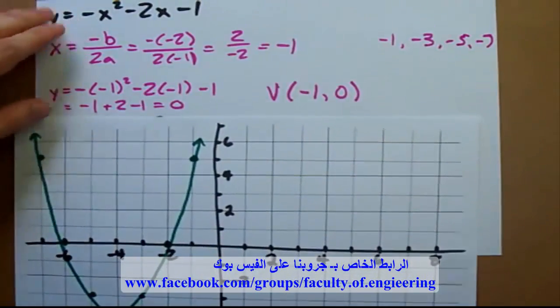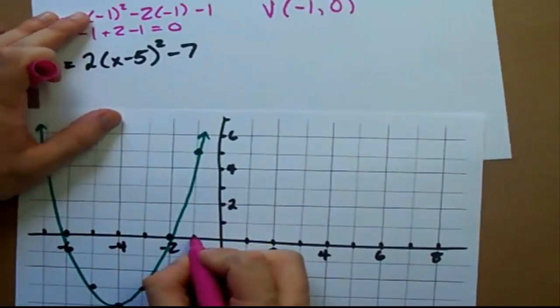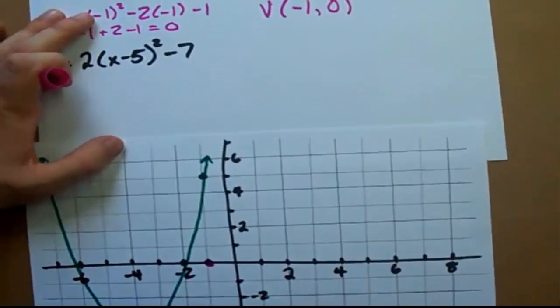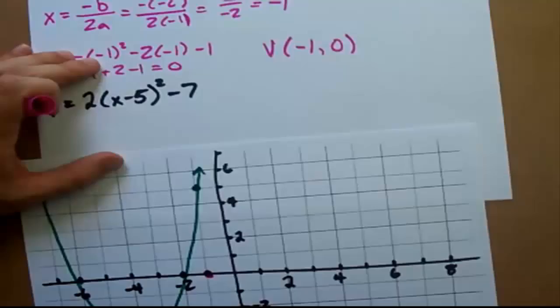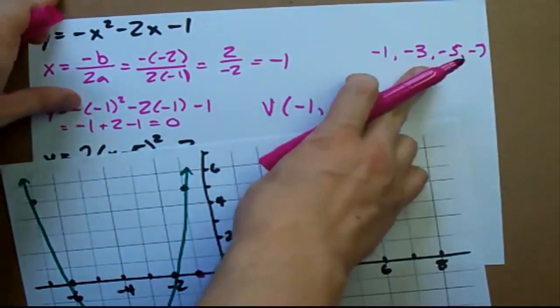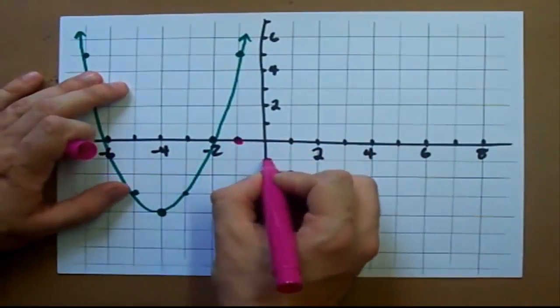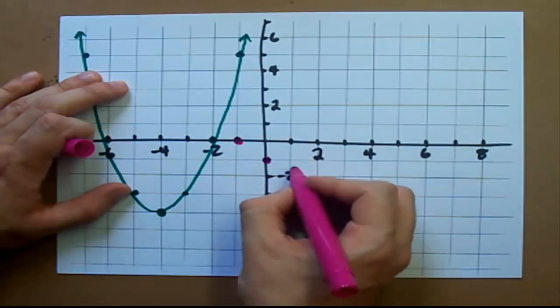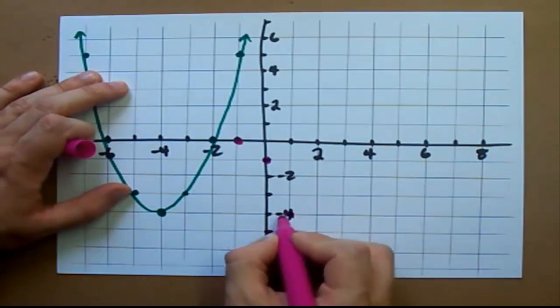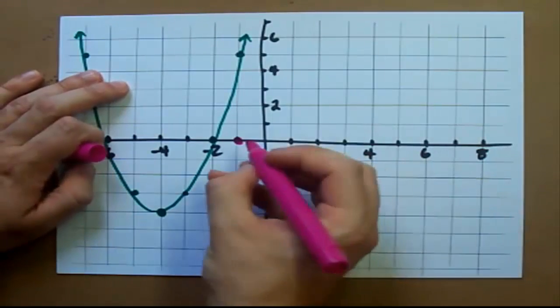What that means is that we have our vertex at negative 1 and 0. That's here. Then we use a step pattern: negative 1, negative 3, negative 5, negative 7. And so we go over 1, down 1, because it's negative. Over 1, down 3. Over 1, down 5. Now I don't have room for that, but that's life.